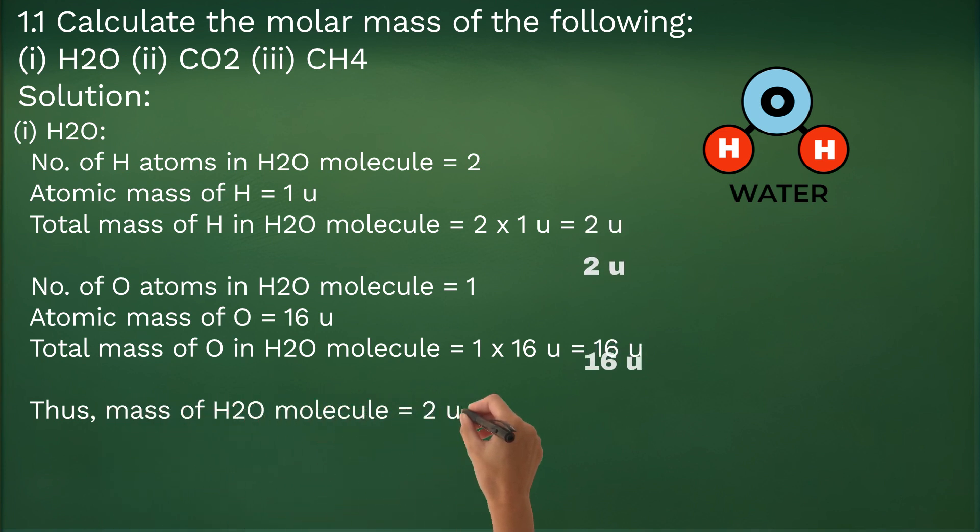It is a thumb rule students, that molar mass of a substance in grams is numerically equal to its molecular mass in atomic mass unit. Thus, molar mass of H2O becomes 18 grams.